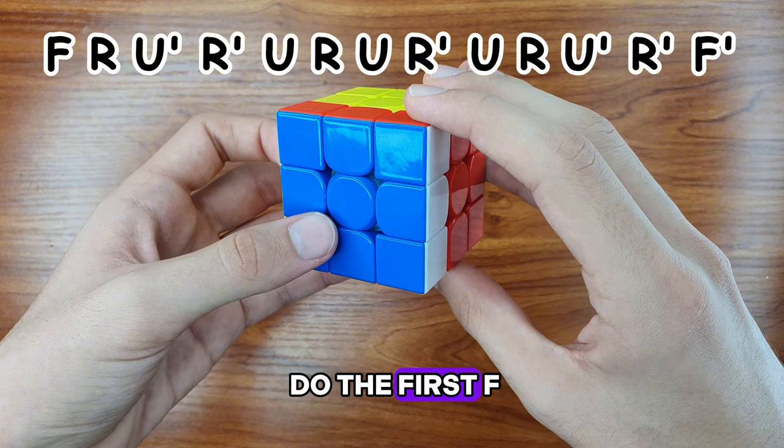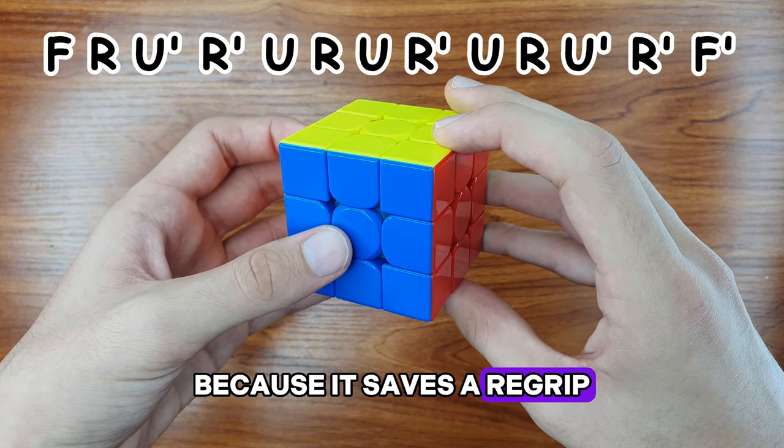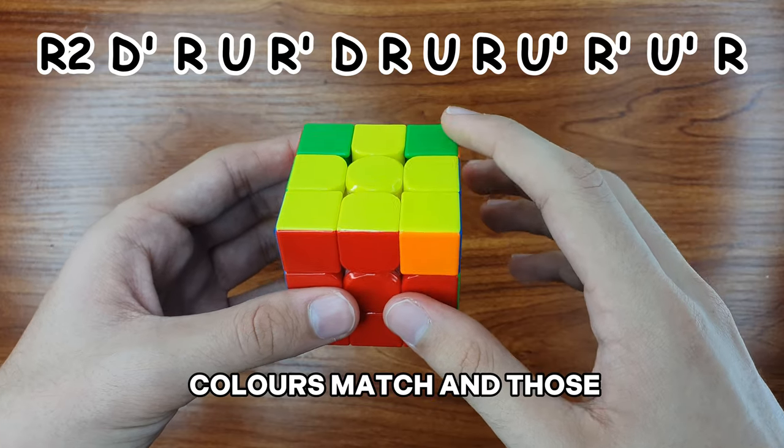It is better to do the first F move like this because it saves a re-grip when the back two colors match and those are opposite.